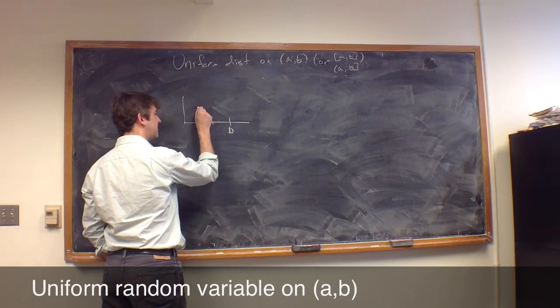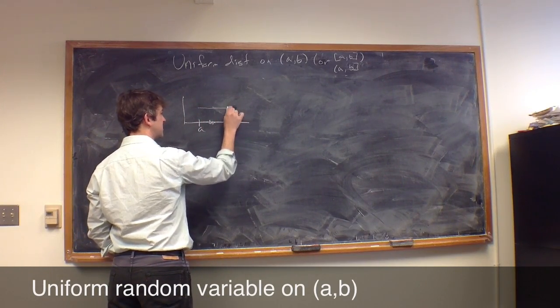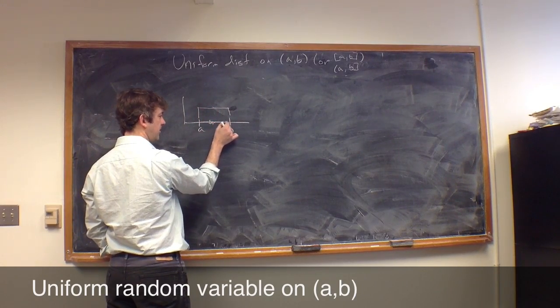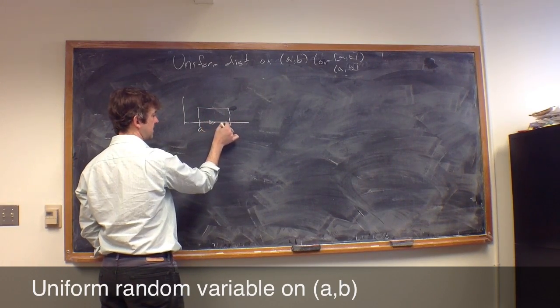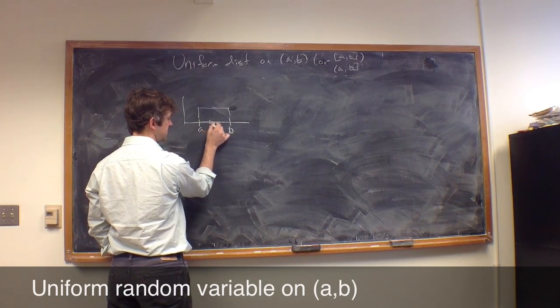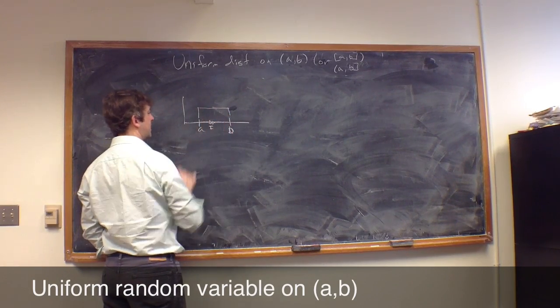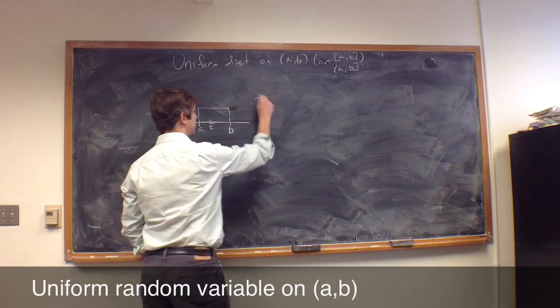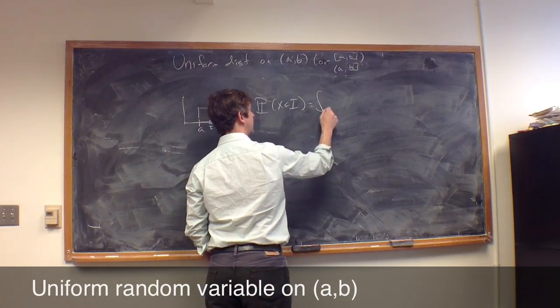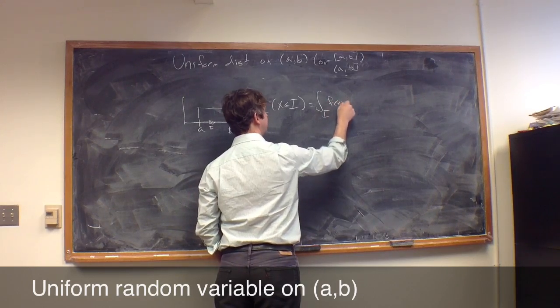If that's true, then the PDF function must be constant over this interval, since to get the probability of being in any little interval I, I'm going to integrate this function against it. And if the little interval I is not going to change as I move it around, this should be constant. The probability of x in I will be the integral over I of my PDF f(x) dx.